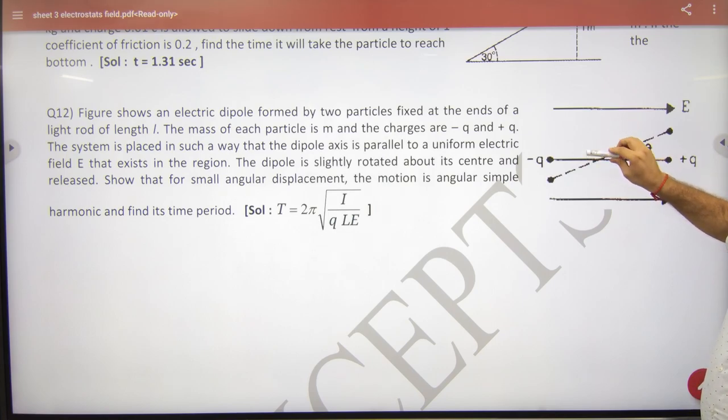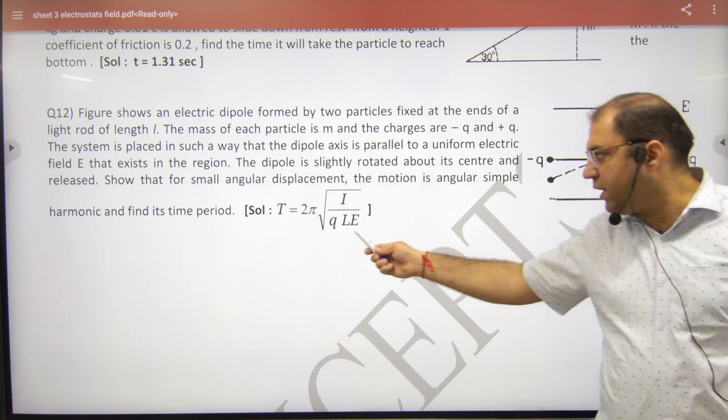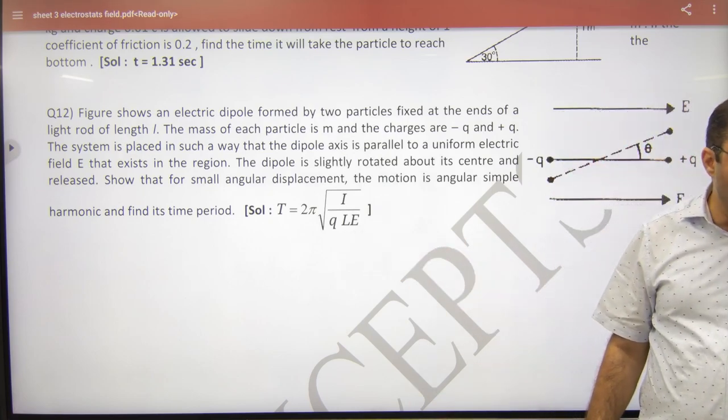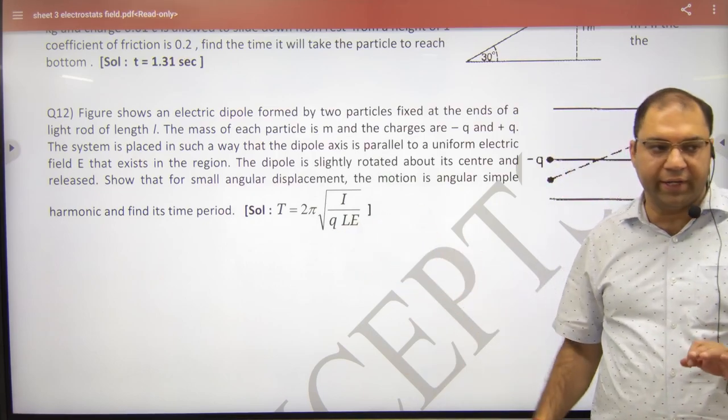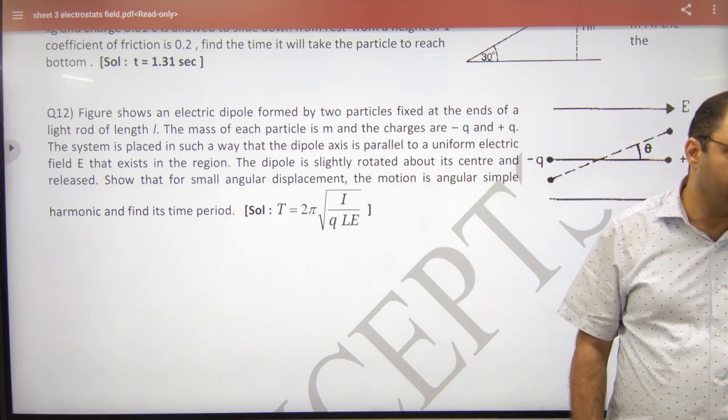Let's prove that this body's motion is angular SHM and its time period equals 2π times the square root of I, the moment of inertia, divided by q into L into electric field.